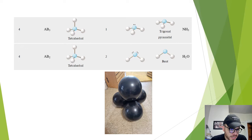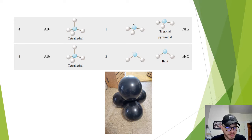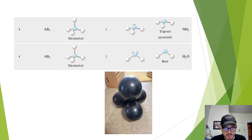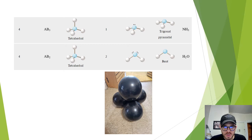With four balloons, the arrangement is a tetrahedron. AB3 and AB2 molecules can adopt this formation, both having four total electron domains. For the AB3 molecule, there is one lone pair and the molecular geometry is trigonal pyramidal — an example is ammonia. For the AB2 molecule, there are two lone pairs and the molecular geometry is bent — an example is water.